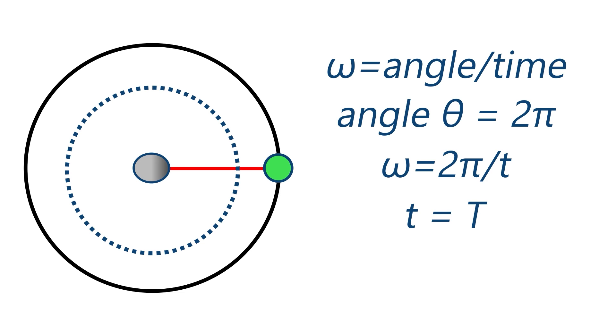Period being the time for one turn. We can rewrite this expression as omega equals two pi over capital T that is for the period. Of course don't forget theta has to be in radians for these formulas to work.